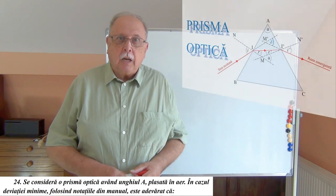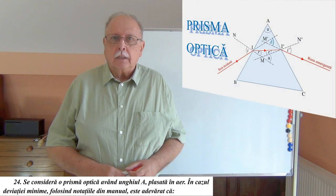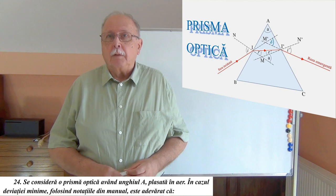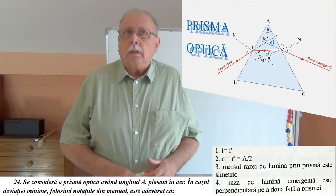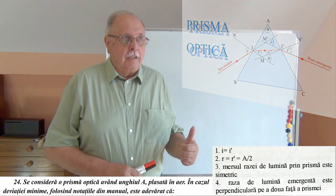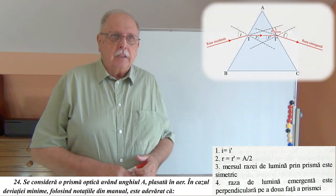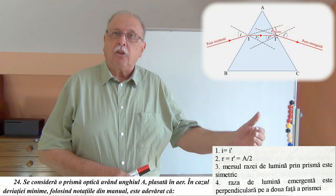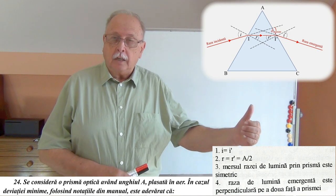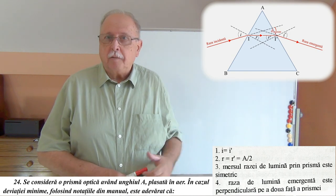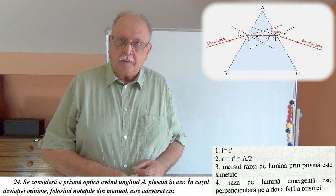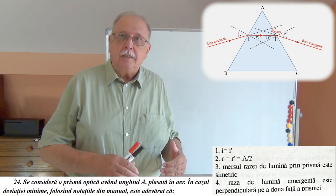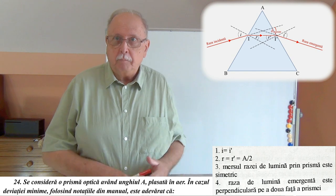Consider an optical prism with angle A placed in air. In the case of minimum deviation, using standard notation: the minimum deviation occurs when the angle of incidence equals the angle of emergence, i.e., i = i'. Variant 1: i = i' — yes, this is the condition for minimum deviation.